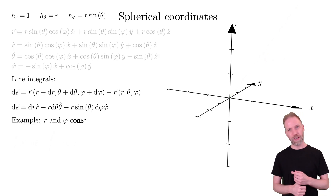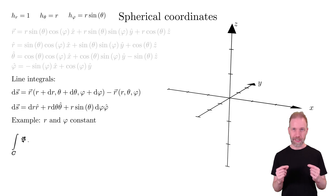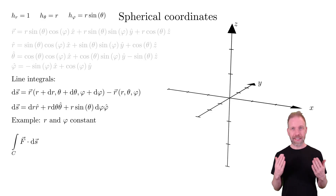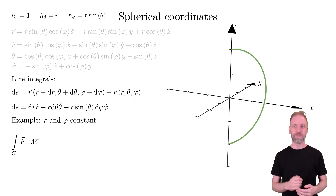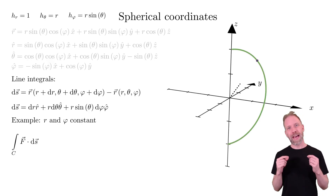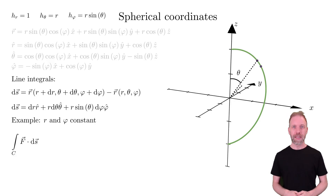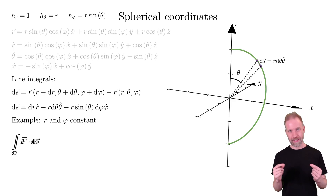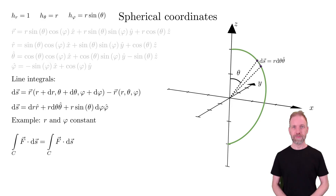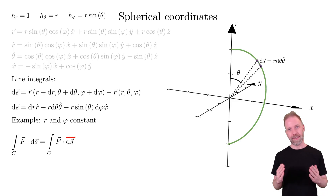If we look at another example where r and phi are constant and we solve the vector integral, we get this curve in the theta direction. We can add one point at the angle theta and take a small step d-theta. The line element would be given by r d-theta theta-hat. Hence, this is what we insert as DS.